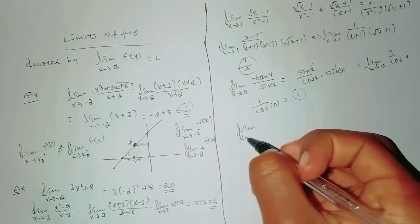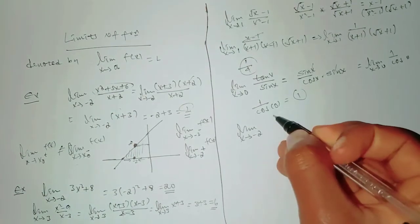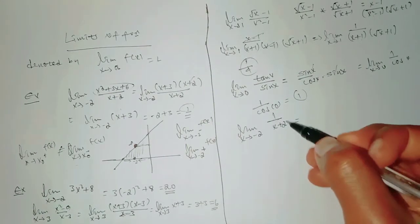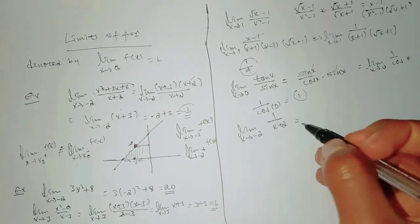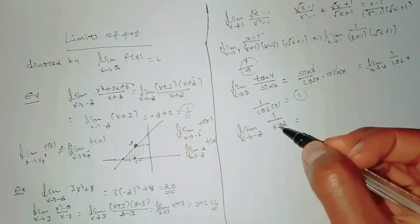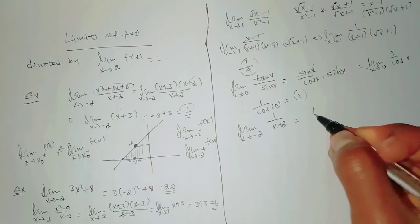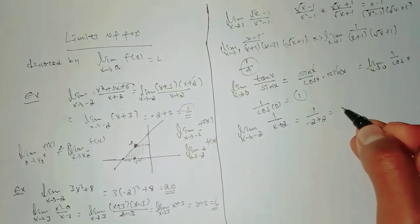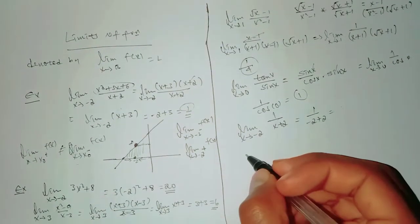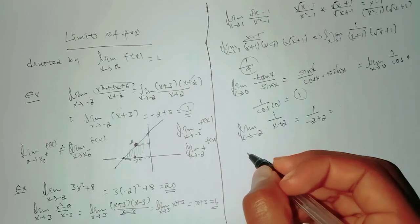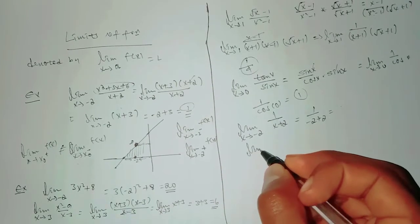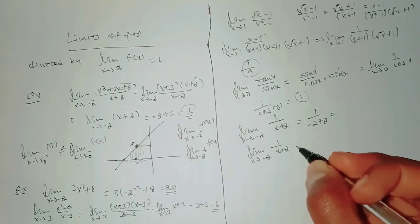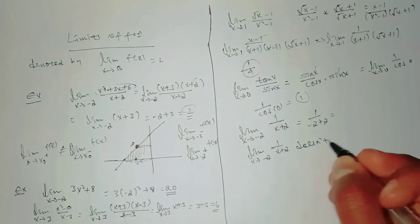Example: limit x goes to negative 2 of 1 over (x + 2). Substituting x equals negative 2: 1 over (negative 2 + 2) equals 1 over 0, which is undefined. Therefore, the limit x goes to negative 2 of 1 over (x + 2) does not exist.